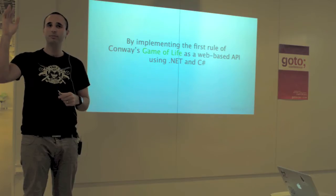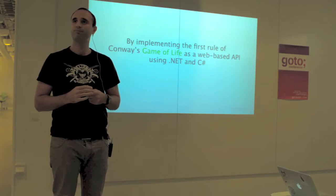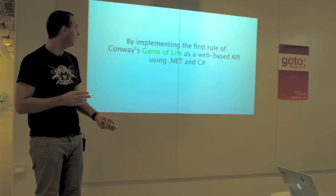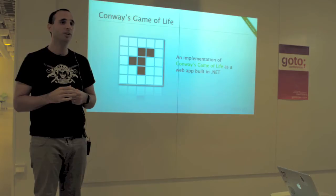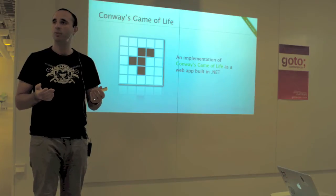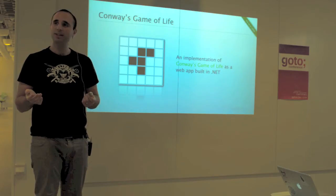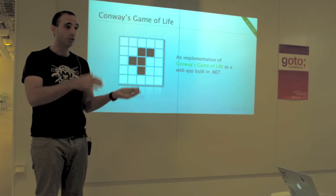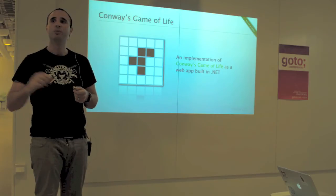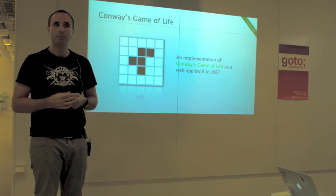Are you familiar with the Game of Life? It's a logic game or a mathematical game that consists of a grid of cells. Each cell in the grid can be either alive or dead. The game is about refreshing this grid with each new generation of cells. What decides if a cell is alive or dead from one generation to the other is based on four simple if-then rules. We're going to implement the first rule of Game of Life, BDD style, in .NET.